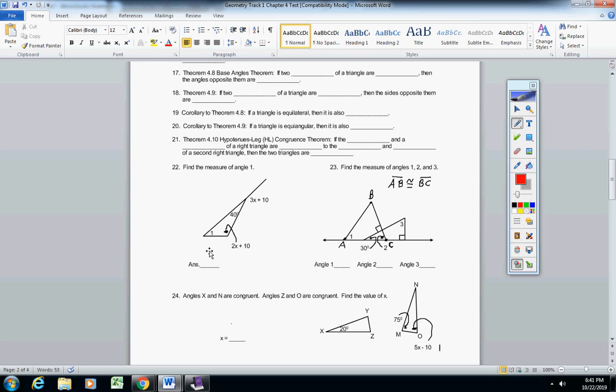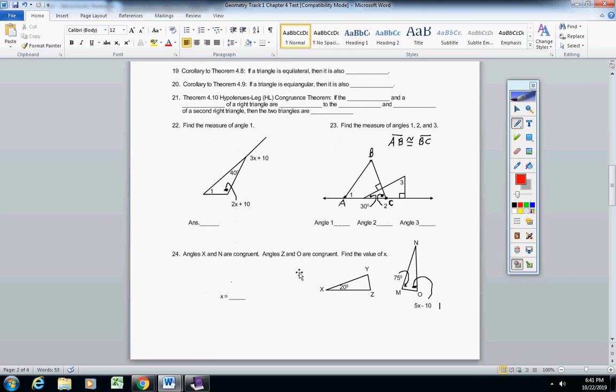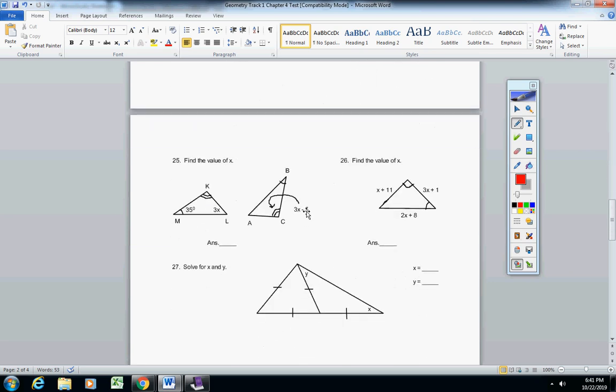Number 23, find the measure of angles 1, 2, and 3. Here's 1, here's 2, and here's 3. Number 24, find the value of X. 25, 26, and 27, find the value of X. So solve for X on those three.